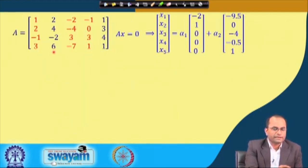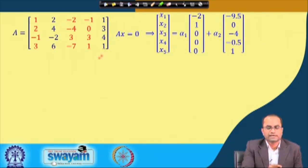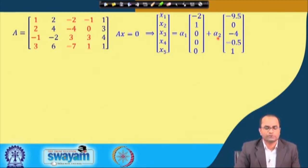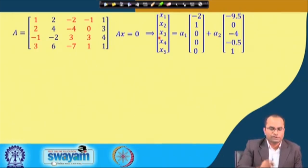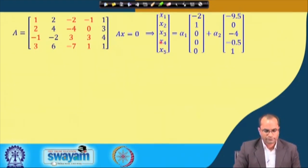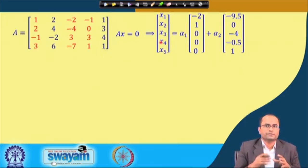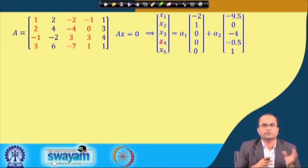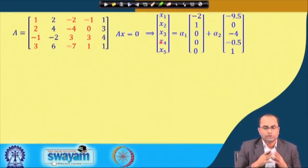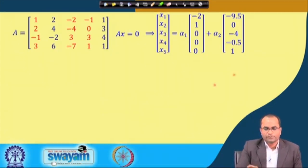By taking the free variables x2 and x5, we can write down the solution of Ax = 0 in a specific form, which we have already observed. Now we are looking for other definitions of rank, because the number of pivots is not the only definition. For that we just need some preparation here.